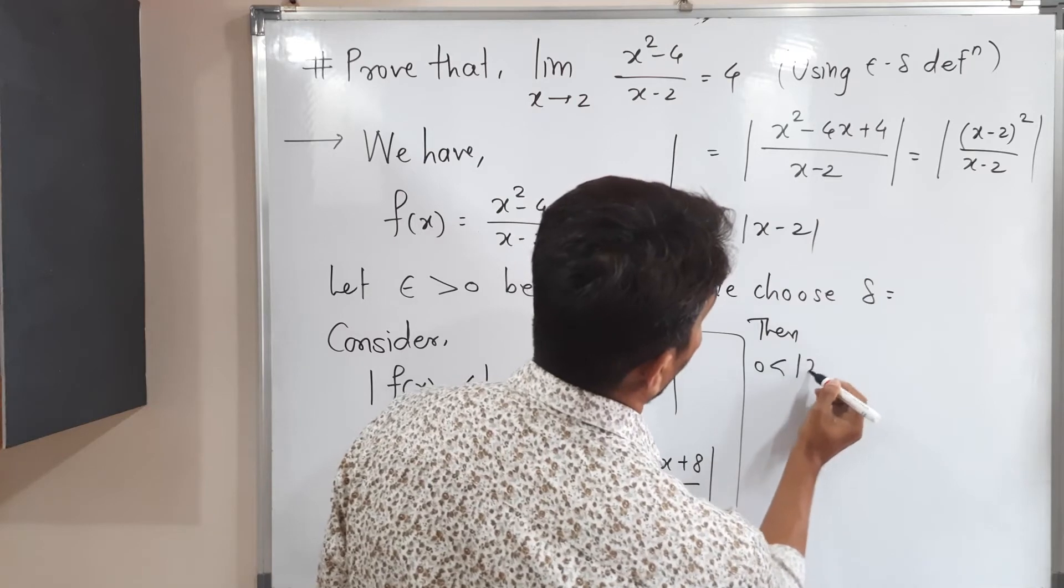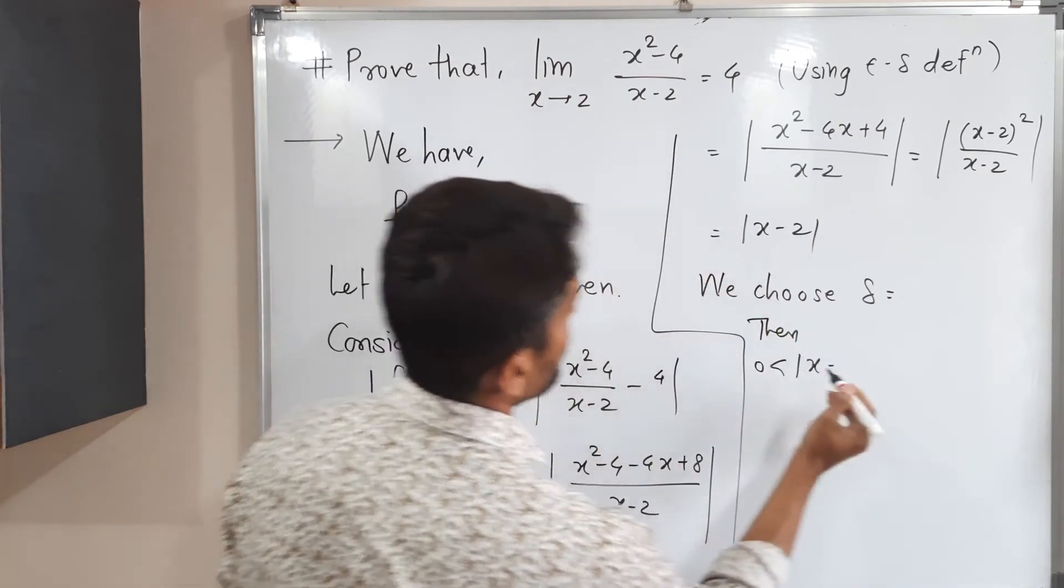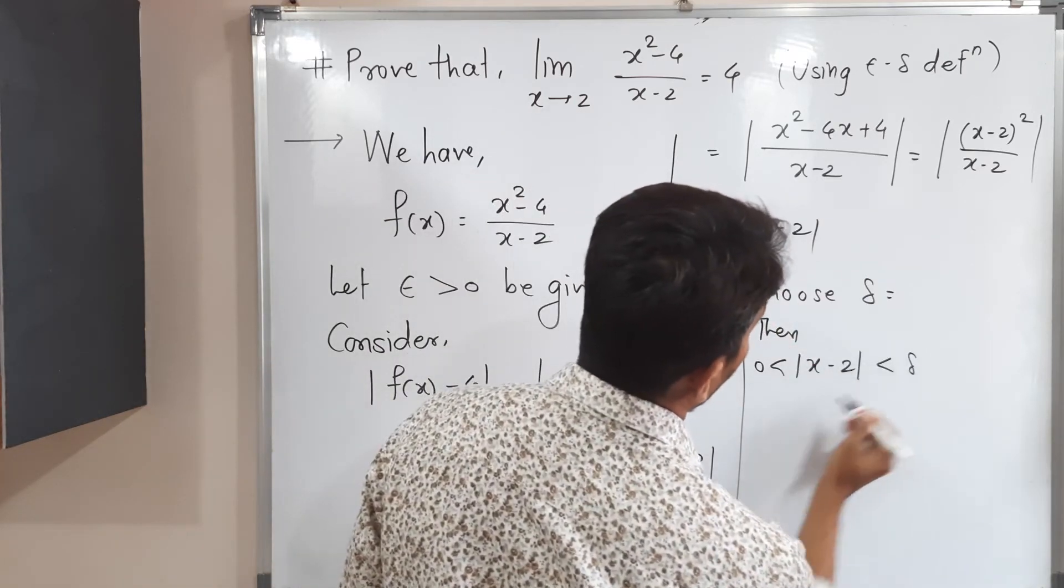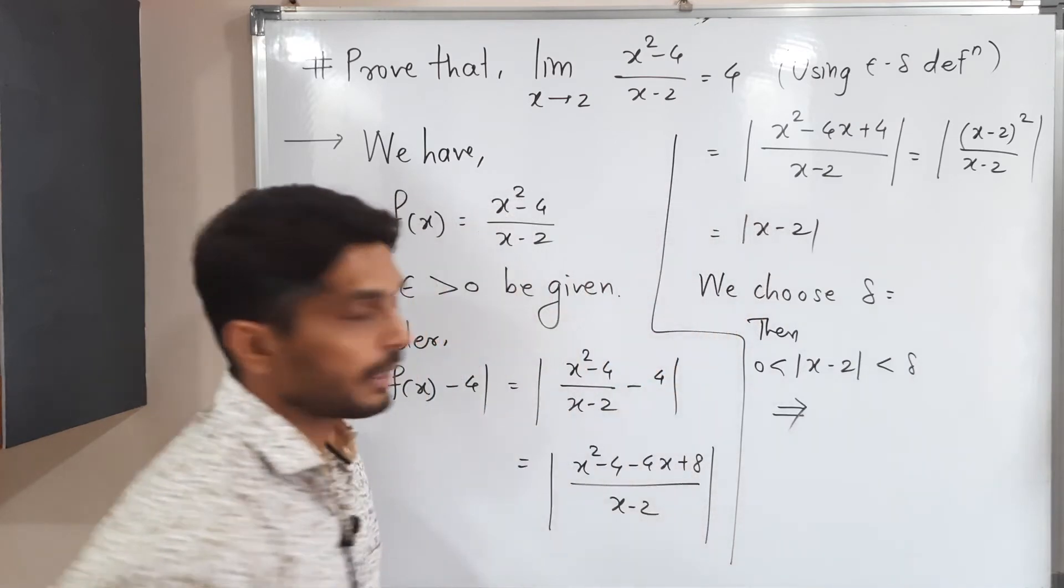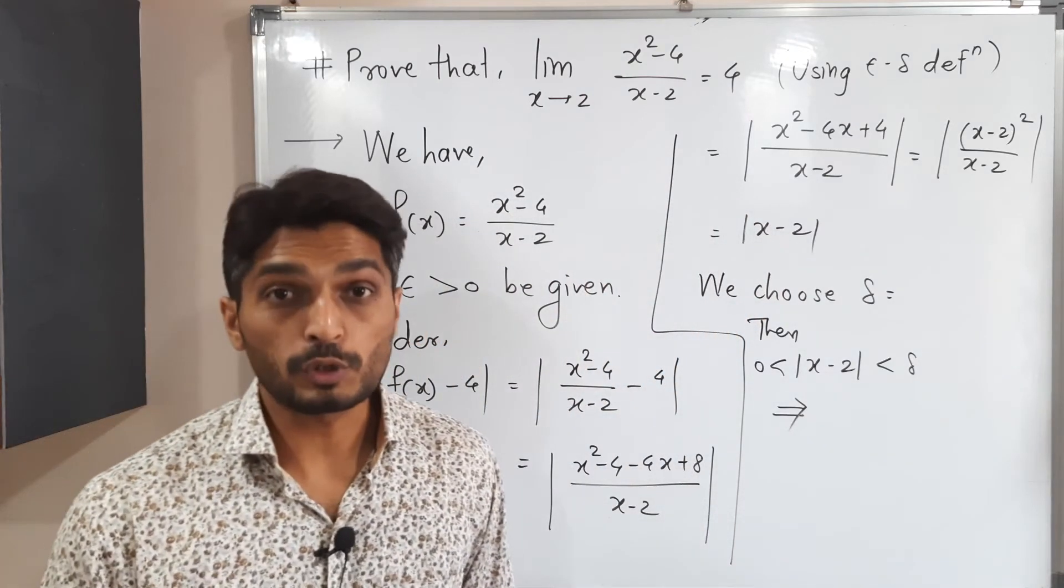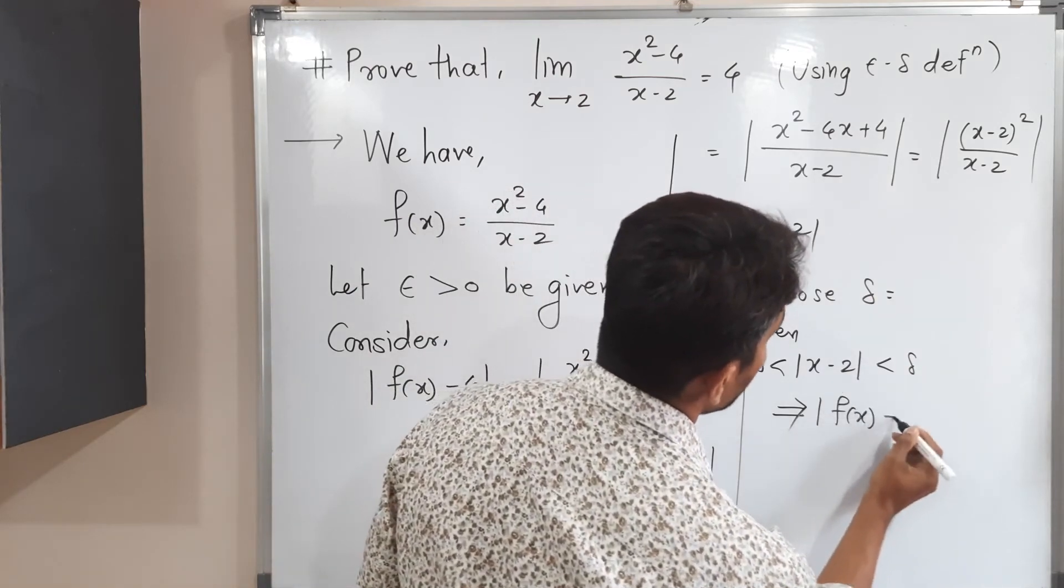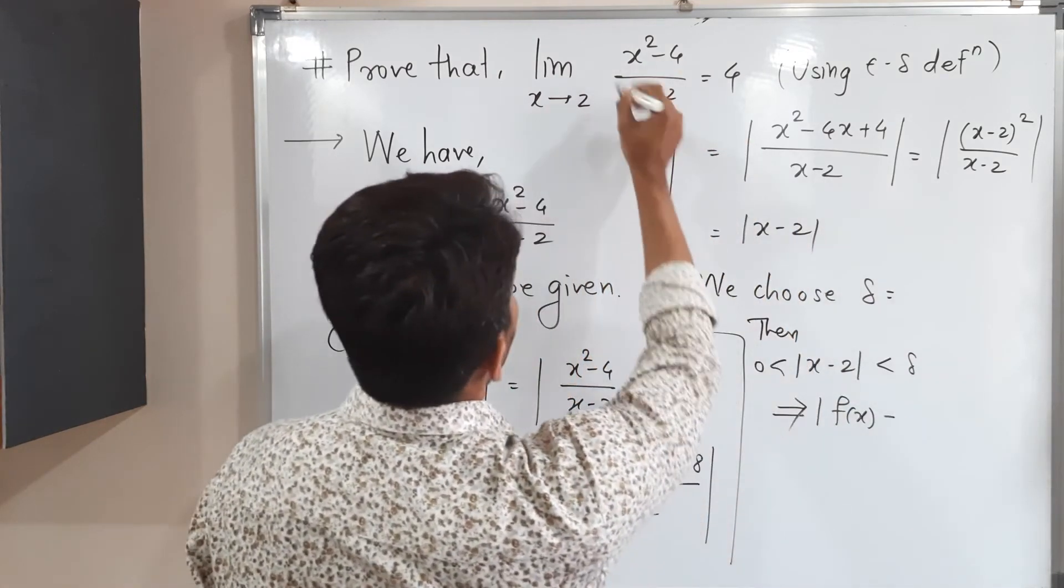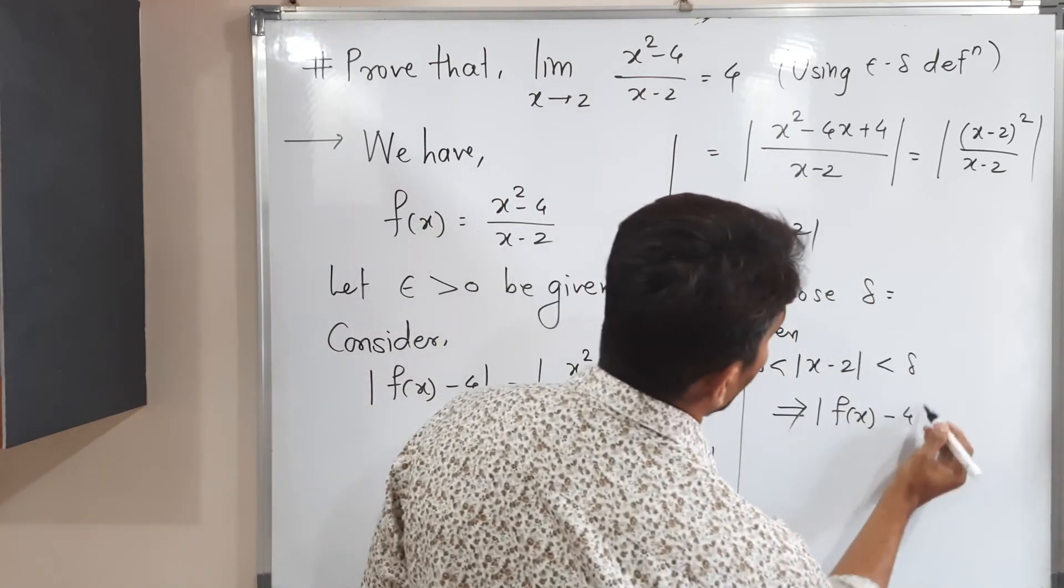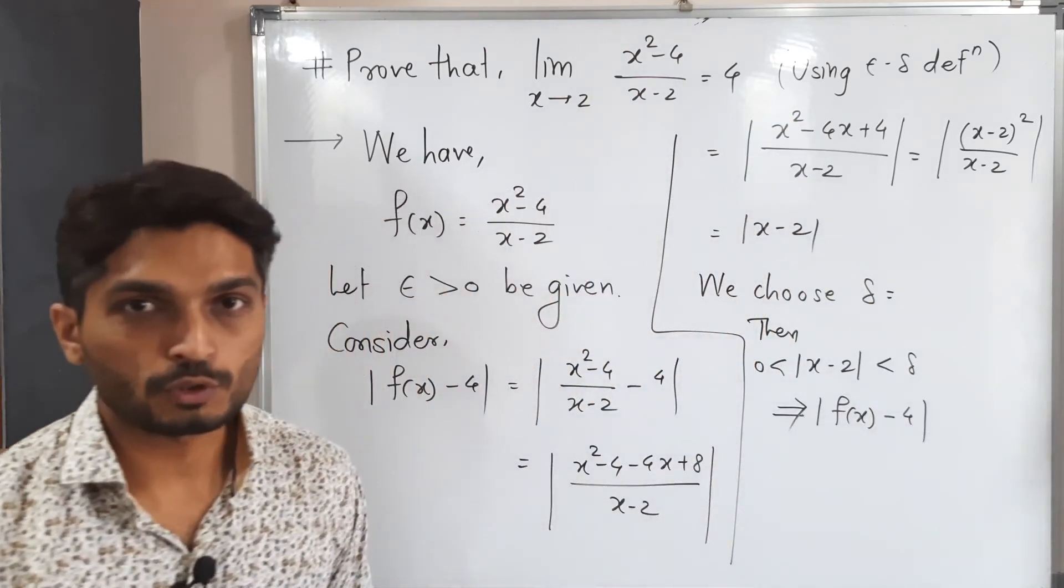So then, zero less than mod x minus 2 less than delta implies. I am simply writing the definition. Epsilon delta definition of limit implies mod f of x minus... This is f of x minus 4. We had to prove that this is less than epsilon.